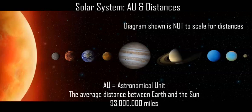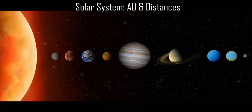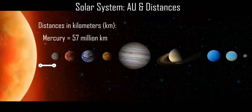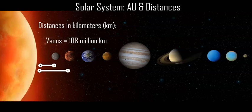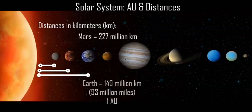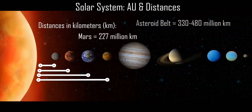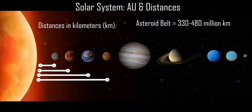So starting from the Sun, Mercury is 57 million kilometers away, Venus 108 million, Earth 149 million kilometers, Mars 227, and the asteroid belt ranges from 330 up to 480 million kilometers away from the Sun.